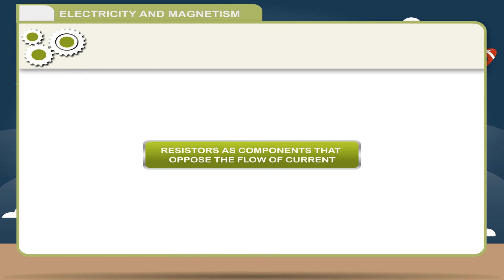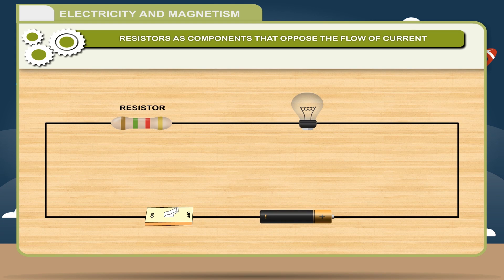Resistors as components that oppose the flow of current. When current flows through a conductor it offers some obstruction to the flow of current. The obstruction offered to the flow of current by the wire is called its electrical resistance. So, the resistance can be defined as the physical quantity that opposes the flow of current in a conductor.